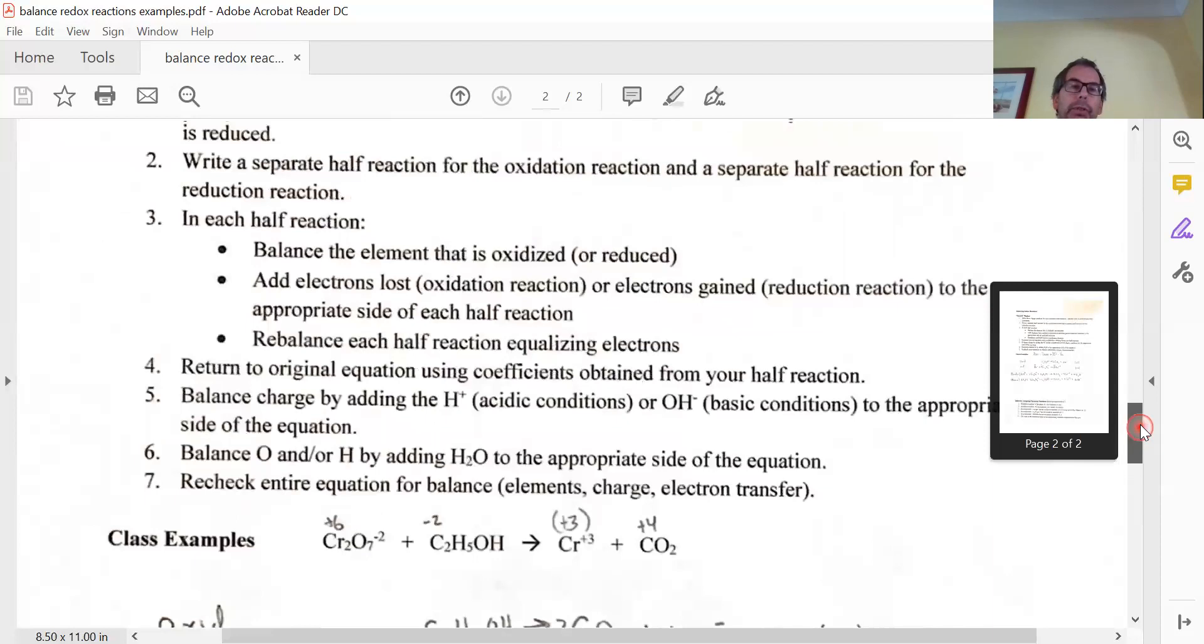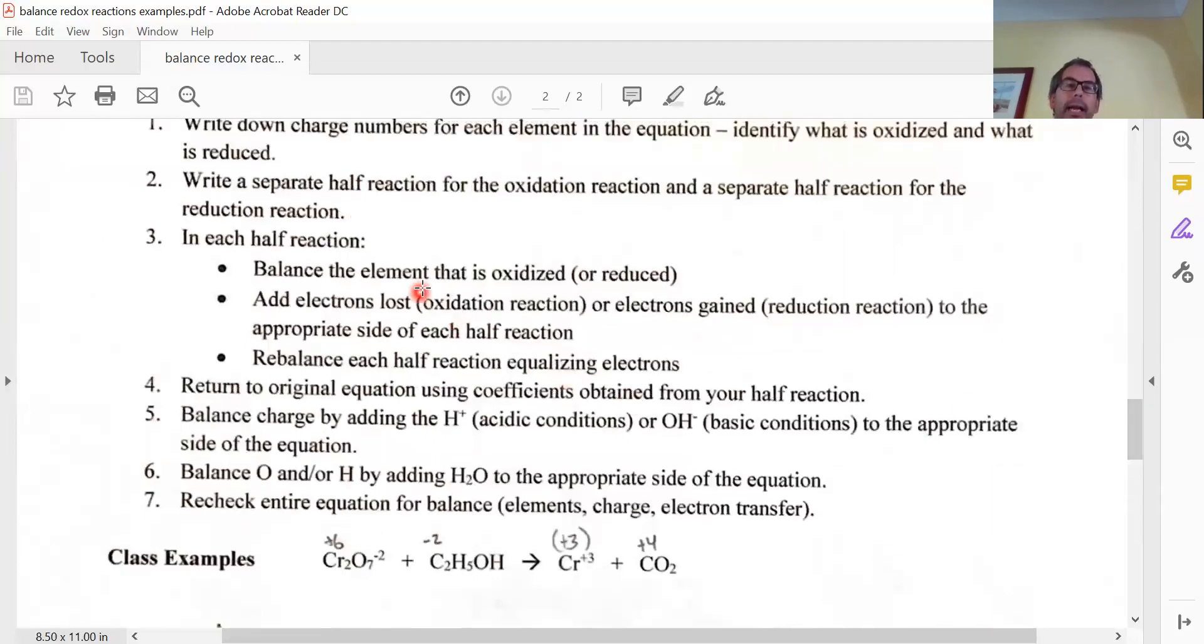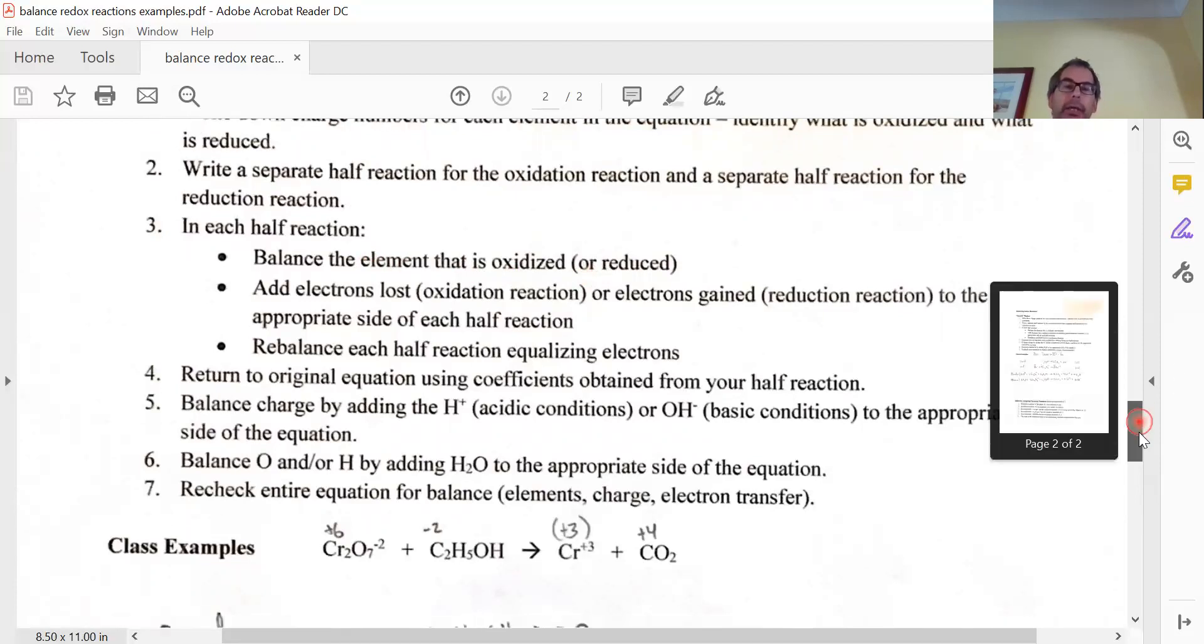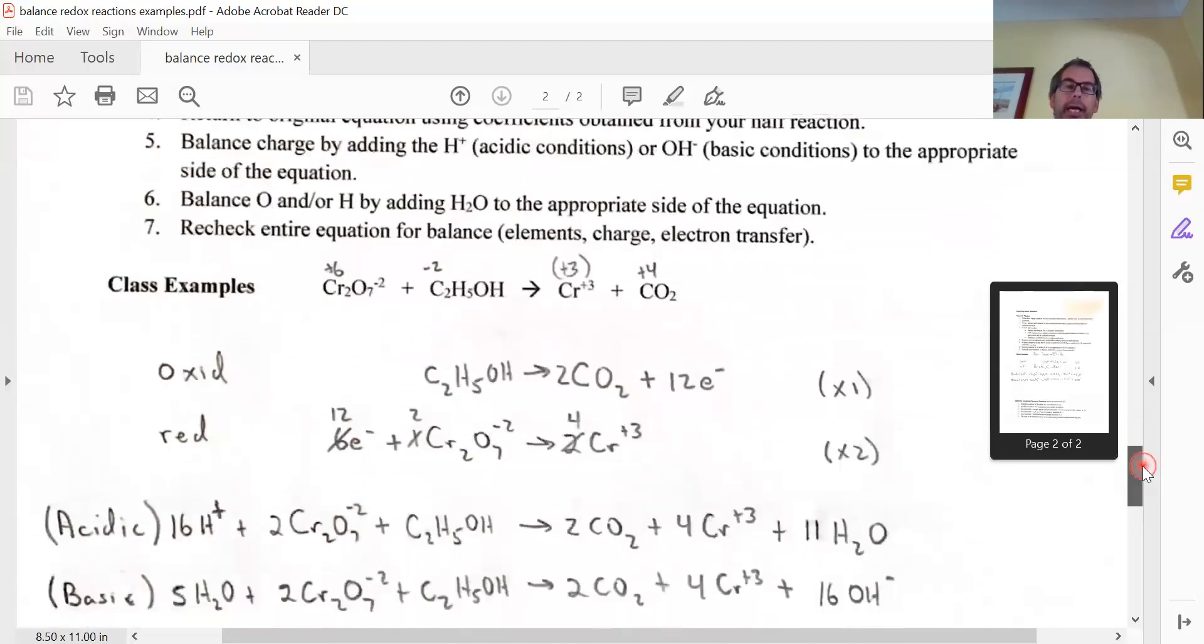It's going back up to our rules, balance the elements that is oxidized or reduced before going to the electrons. So you got to make sure that the element is balanced, and you're talking about the same number each time.